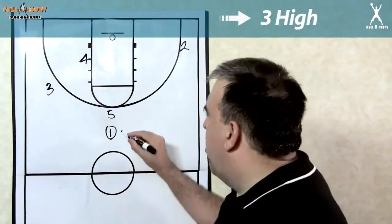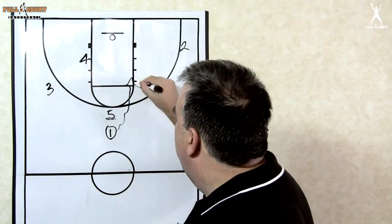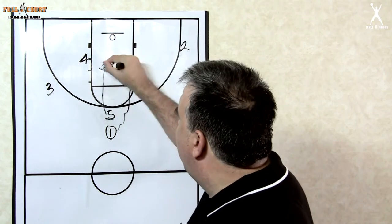Let's show the ball screen action here with five. Five sets the screen for one. One's going to attack the basket. Five rolls.